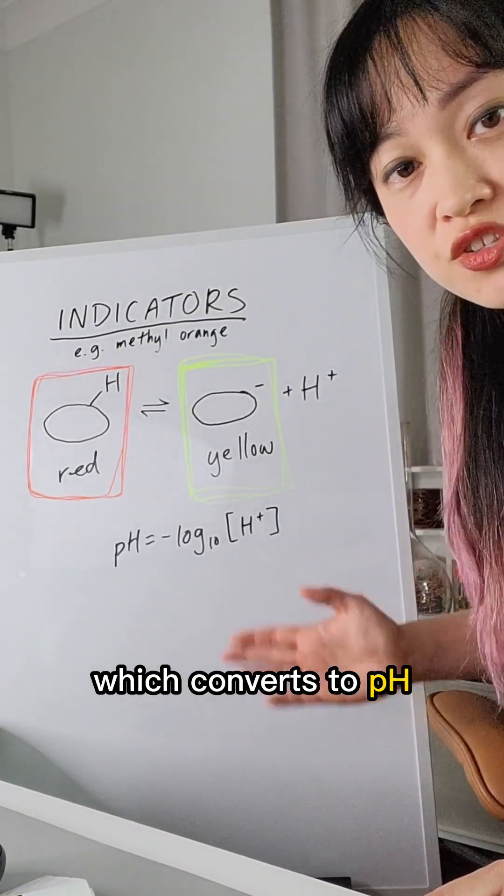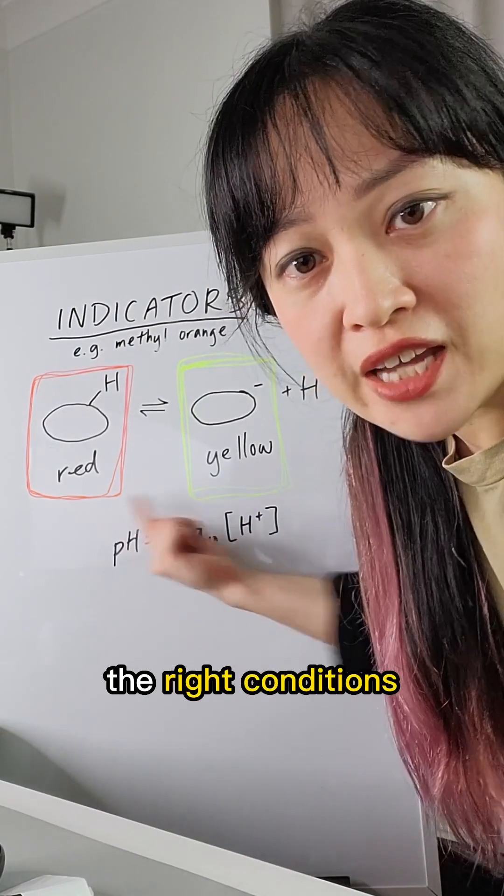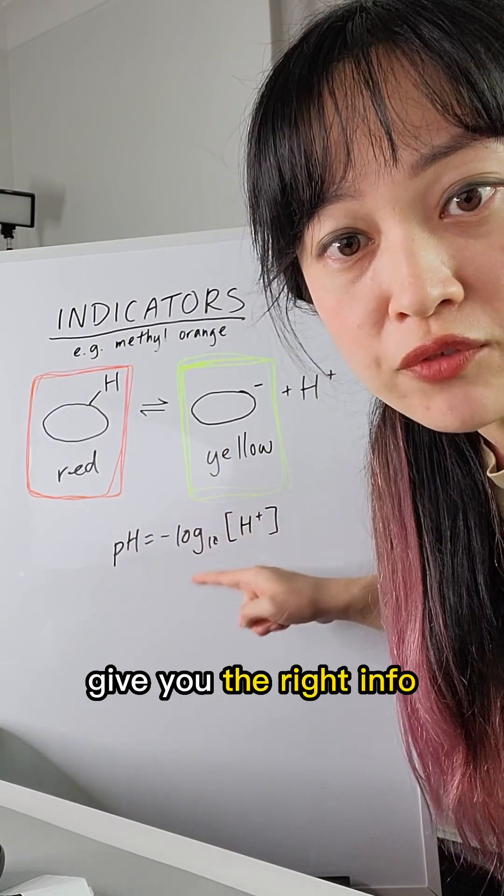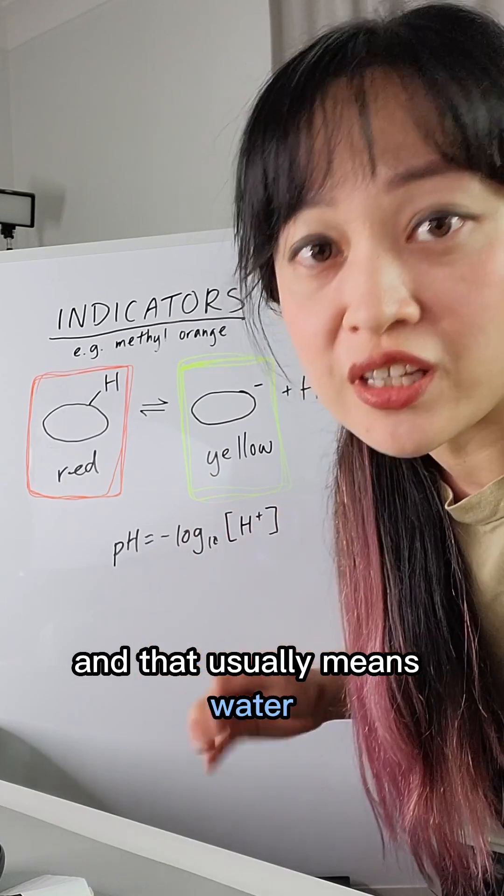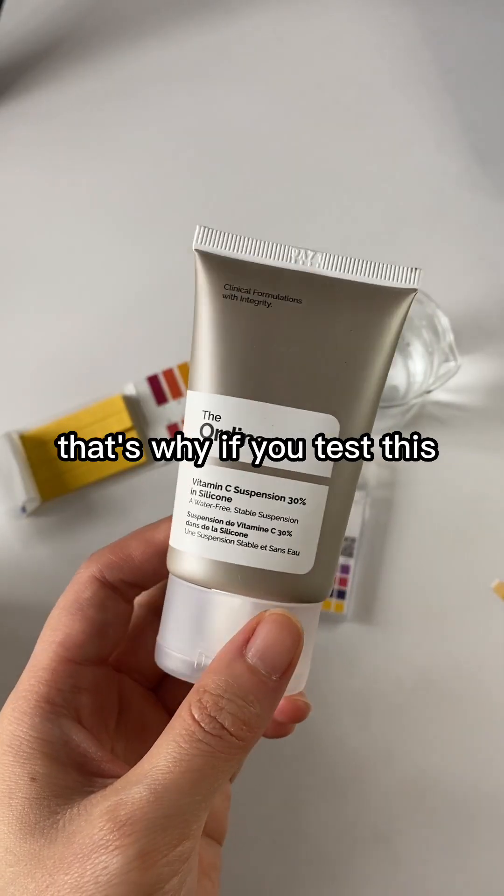But you need to have the right conditions for this equilibrium to form so that the color will give you the right info, and that usually means water. That's why if you test this very acidic waterless vitamin C, the colors look like pH 5 to 6.